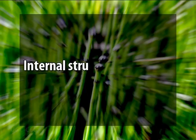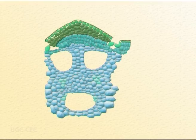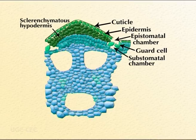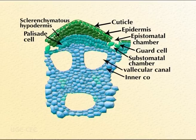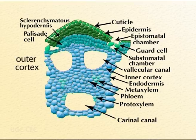Now we will discuss the internal structure of the aerial shoot. The internodes and nodes have different internal structures. When we cut the transverse section of an internode, it is wavy in outline due to the presence of ridges and grooves. It has a distinct epidermis, a well-developed cortex, a stele with a ring of vascular bundles, and a large central pith cavity. The epidermis is composed of a single layer of cells with a heavy incrustation of silica on their outer and radial walls. Silica also provides mechanical strength to the shoot.